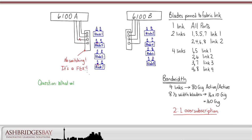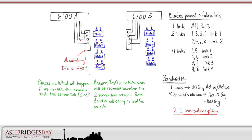Question 2: What will happen if we reack the chassis with the server link failed? The answer, traffic on both sides will be repinned based on the two server link scenario. Ports 3 and 4 will carry no traffic on either side.